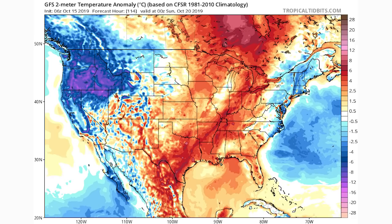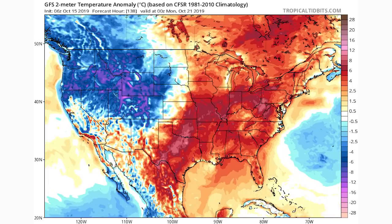By Sunday October 20th, colder than normal conditions persist in the west, particularly the Pacific Northwest, but warmer than normal conditions are moving further and further east. This is that pattern switch around the 20th that makes conditions very unfavorable for cold in the east and very favorable for cold in the west. By Monday October 21st, the warm has fully engulfed the entire eastern United States and that cold is really entering the western United States — that five-day pattern switch between the 20th and 25th was evident in the teleconnections and it's coming true on the GFS model.